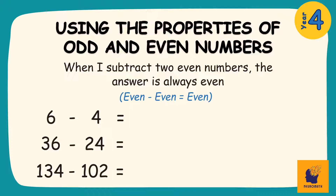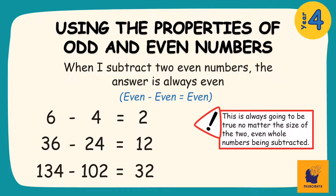We can check to see this is true by solving our problems. 6 take away 4 is 2, which is even. 36 take away 24 is 12, also even. And 134 take away 102 is 32, an even number. Something important to remember is that this condition will always be true, no matter the size of the two even whole numbers being subtracted.